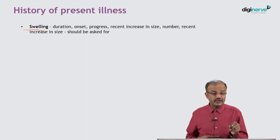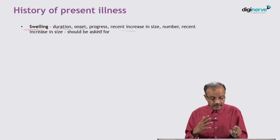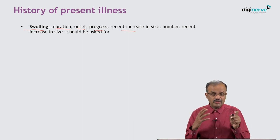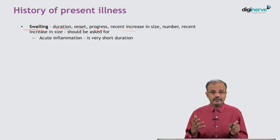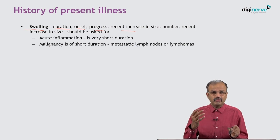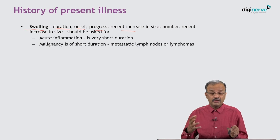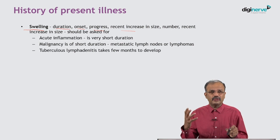History of present illness is very important. Swelling is the key focus — you must ask about duration, onset, progress, recent increase in size, and number of swellings, as each has its own significance. Acute inflammation has a very short duration. Malignancy also progresses over a short period — a few weeks to a few months. Tuberculosis and lymphoma take longer, maybe six to seven months.